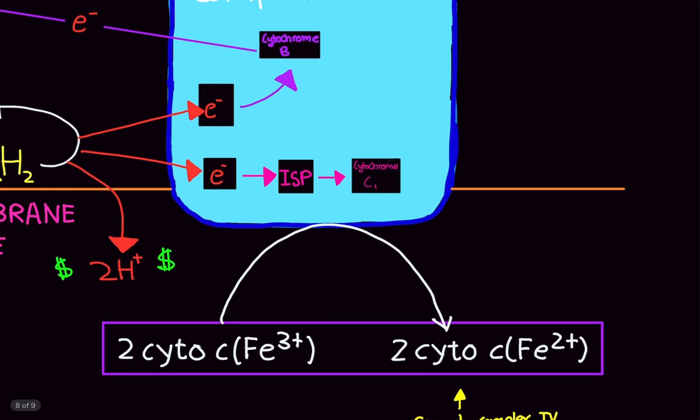And what's going to happen is this cytochrome C1 is going to donate the electron to cytochrome C. Now, this cytochrome C, when it has the electron, is now going to go to Complex 4. So, when we get to Complex 4, you're going to see why. But it's basically just passing it on to the next complex, just moving one of the electrons to the next complex.